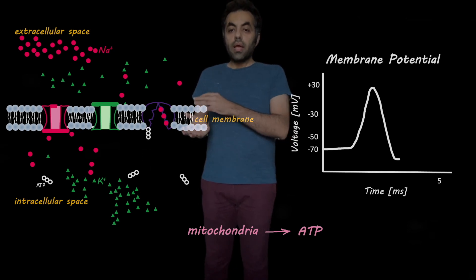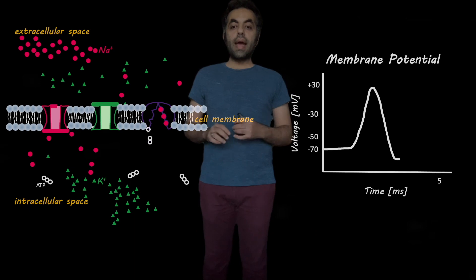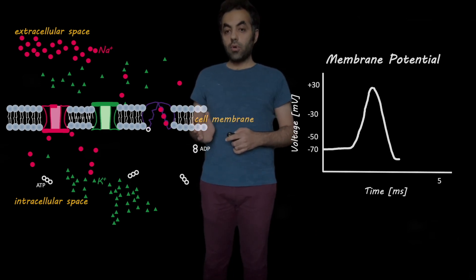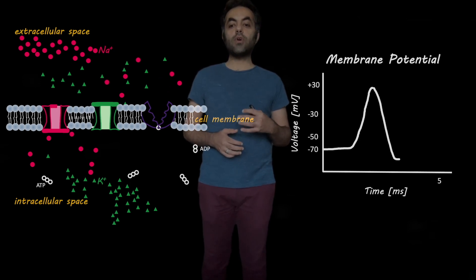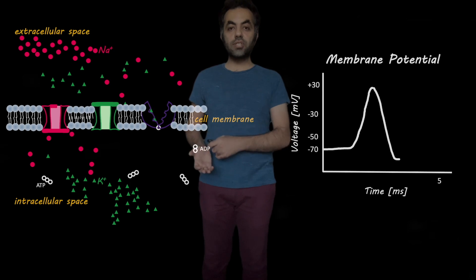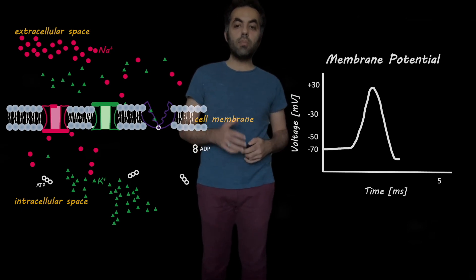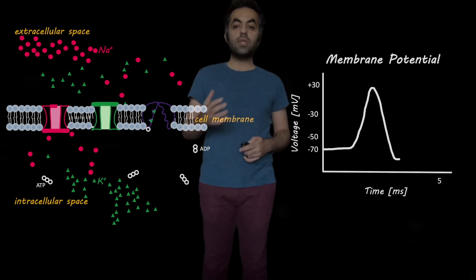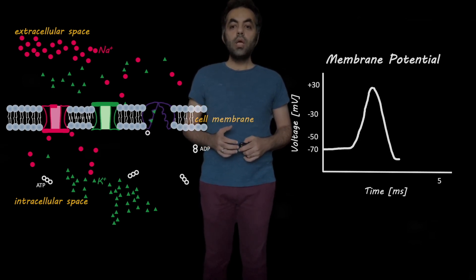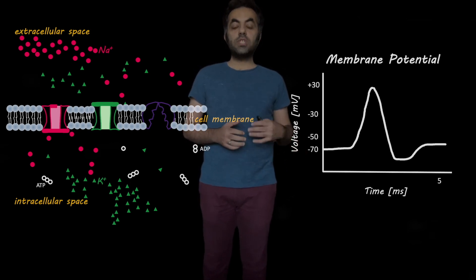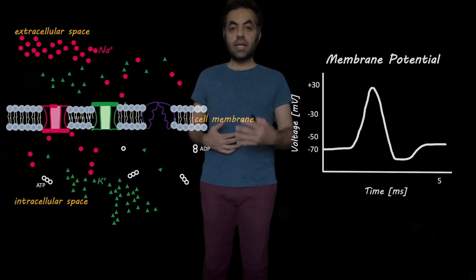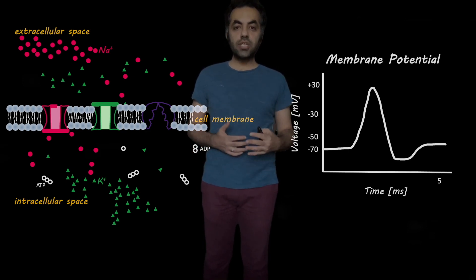The sodium-potassium pump has three spots for sodium ions and two spots for potassium ions, transporting three sodium ions from the intracellular space to the extracellular space and two potassium ions from the extracellular space to the intracellular space. Continuing this process, the membrane potential goes back to minus 70 millivolts — the resting potential — and the cell gets ready for the next action potential.